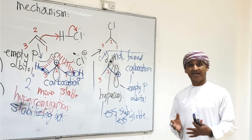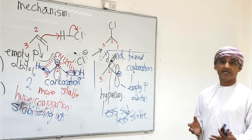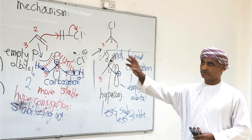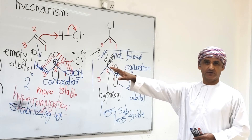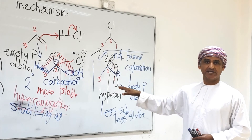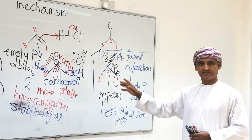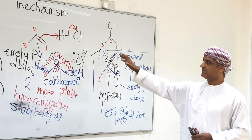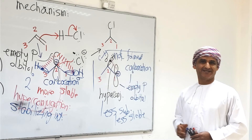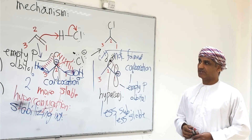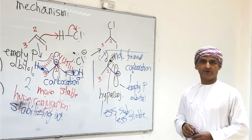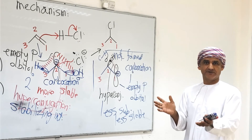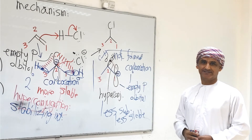Less substituted carbocations are less stable than more substituted carbocations due to inductive effect and hyperconjugation. This is actually the rationale and explanation of Markovnikov's rule. The observation made by Markovnikov can be explained by carbocation stability, which is explained in terms of hyperconjugation.